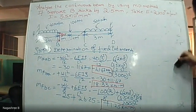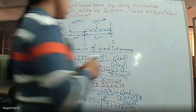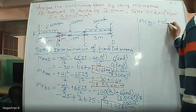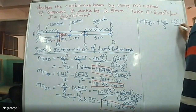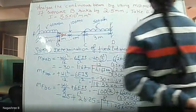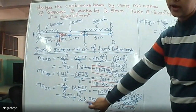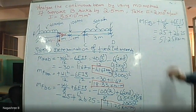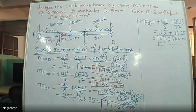For MFCB: it is the positive variation. +WL/8 + 6EI·δ/L² = +25 + 26.25 = +51.25 kNm.